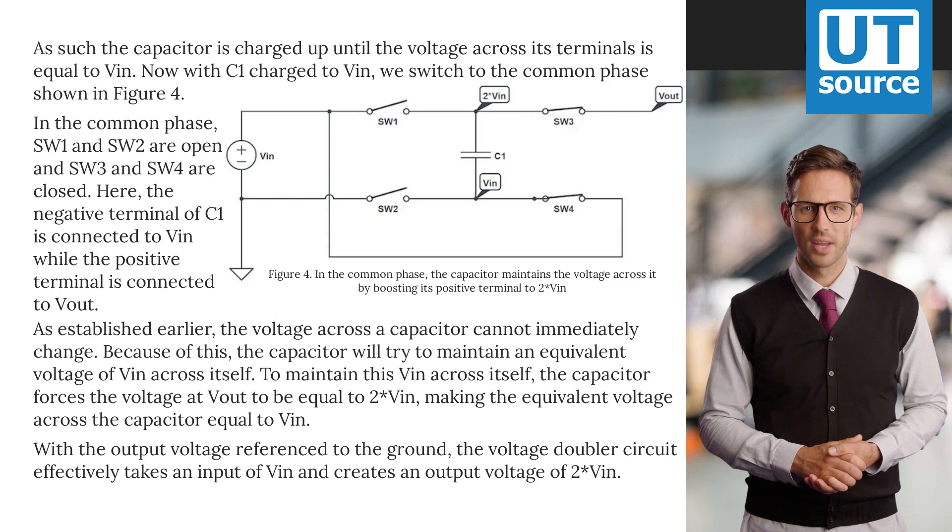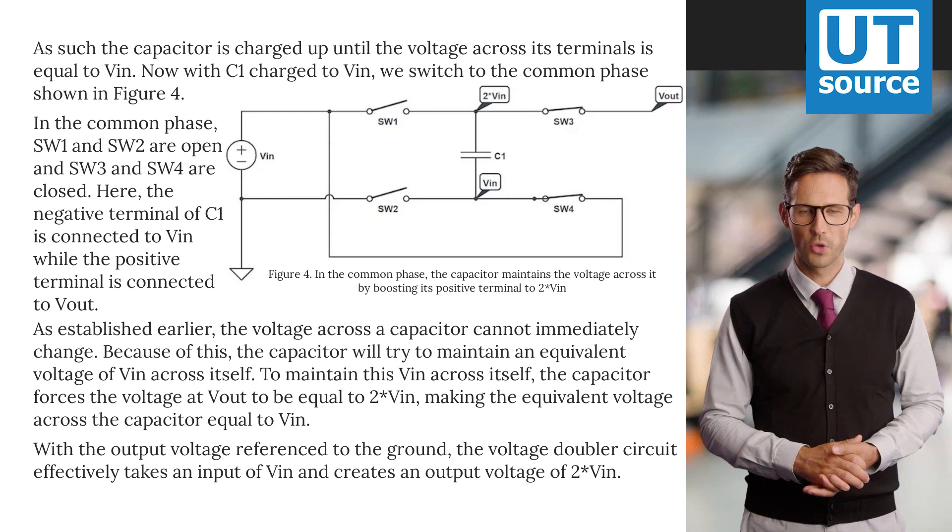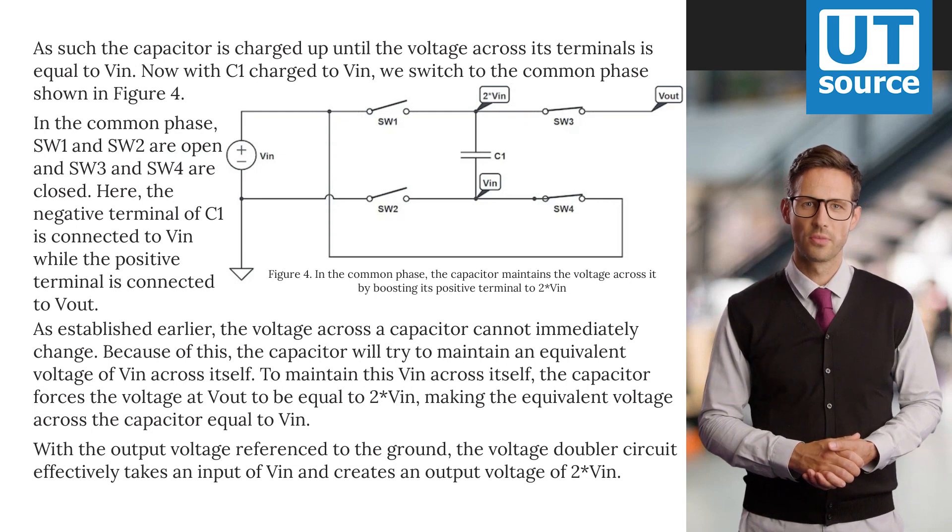In the common phase, SW1 and SW2 are open and SW3 and SW4 are closed. Here, the negative terminal of C1 is connected to VIN while the positive terminal is connected to VOUT. As established earlier,